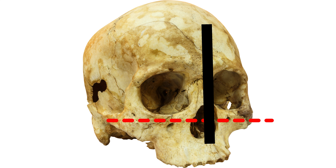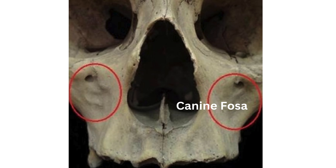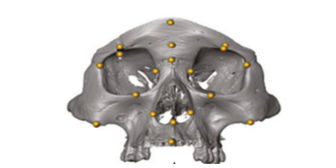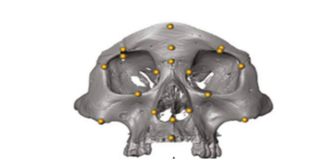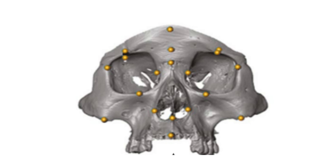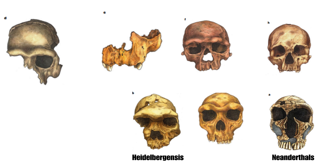Also, there is typically a hollow space below the eye known as the canine fossa. These unique features contribute to the distinct shape of our faces. Researchers examine if the last common ancestor's zygomaxillary region resembled modern humans, Neanderthals, or a mix. Homo heidelbergensis, a potential ancestor, seems to lack these features in the zygomaxillary region.